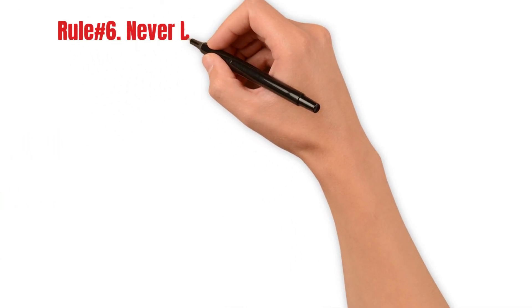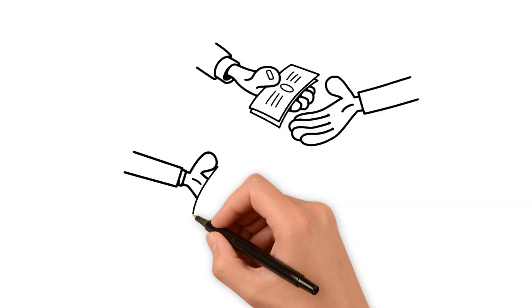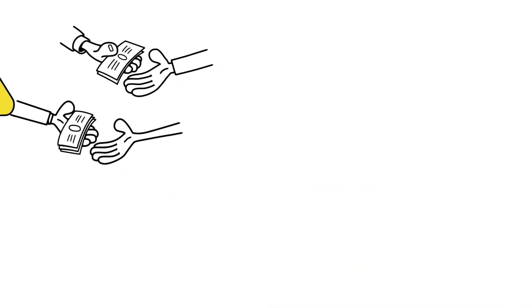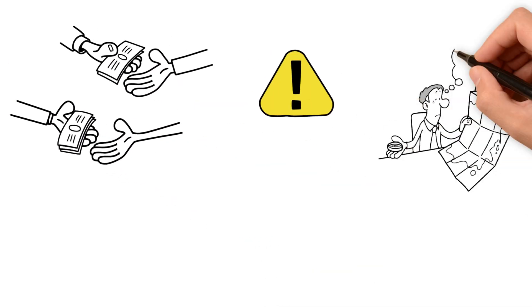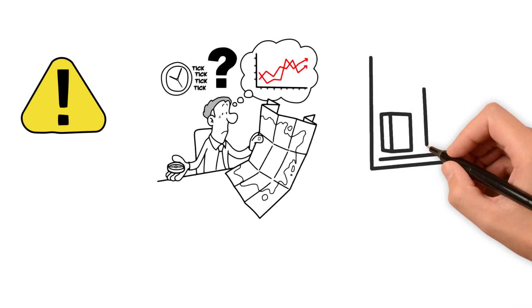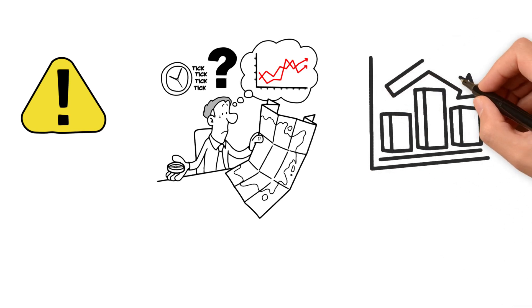Rule number six: Never borrow money to invest in the market. Borrowing money to invest might be tempting, but it involves substantial risk. Markets are always unpredictable, and even the most reliable stocks can fall in the short term due to a rumor or world event which has little to do with their business.